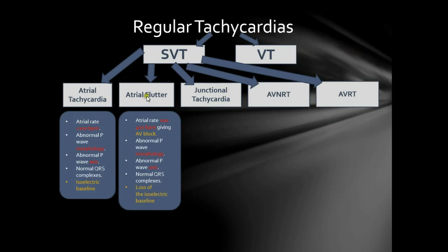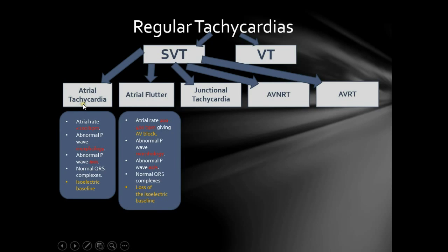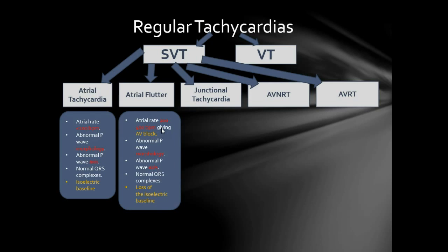The second tachycardia is atrial flutter, which is usually due to a re-entry circuit within the right atrium — unlike atrial tachycardia, which could be due to increased automaticity or a re-entry circuit. Atrial flutter differs in two key ways: the atrial rate is 200 to 400 beats per minute, producing AV blocks because the AV node cannot conduct atrial discharge rates greater than 200 bpm. The other difference is loss of the isoelectric baseline, because the flutter waves are so close together you cannot see the baseline between them.